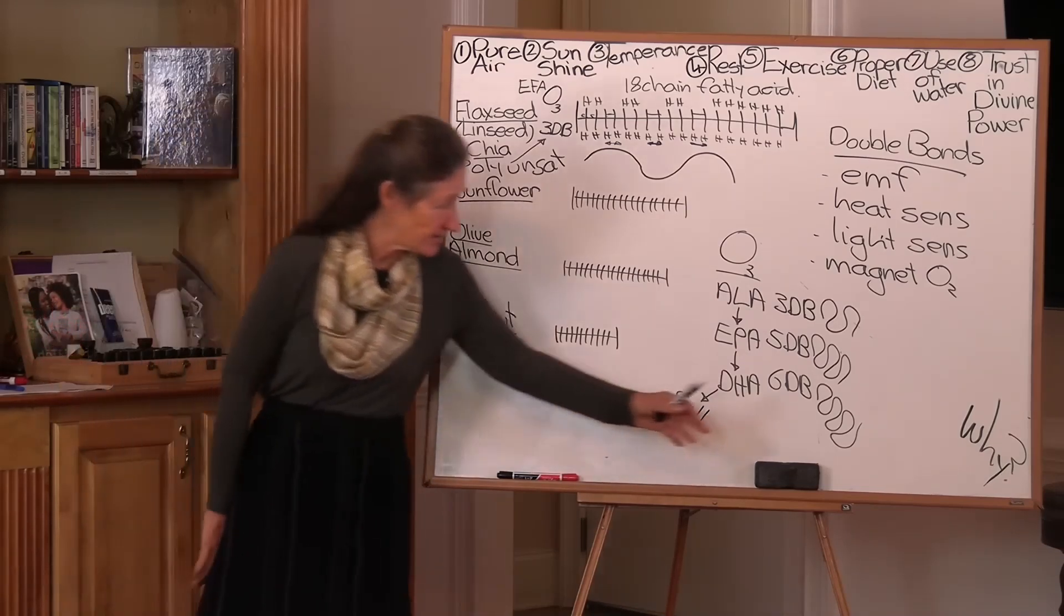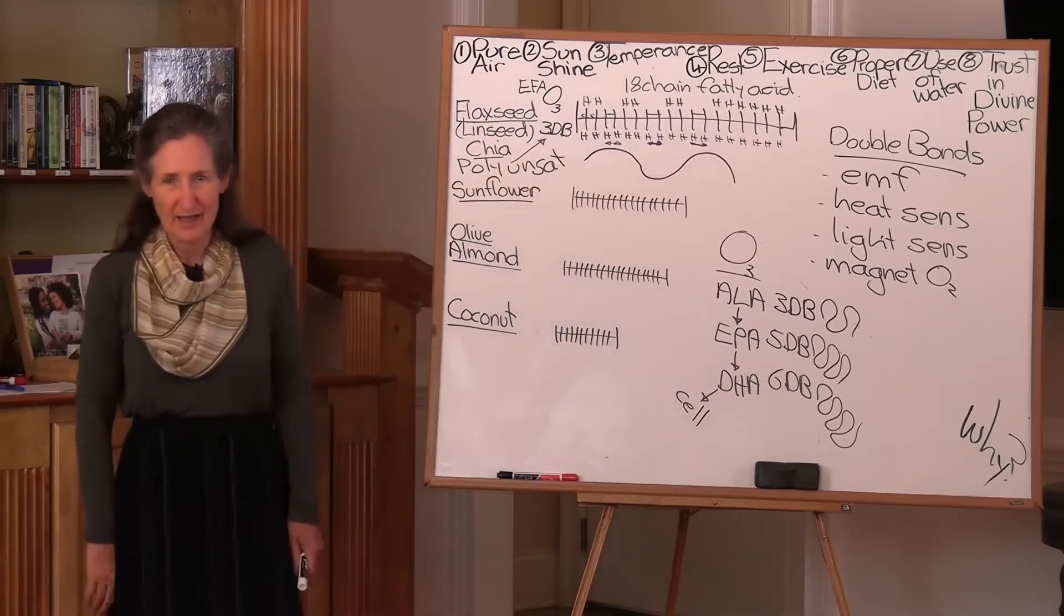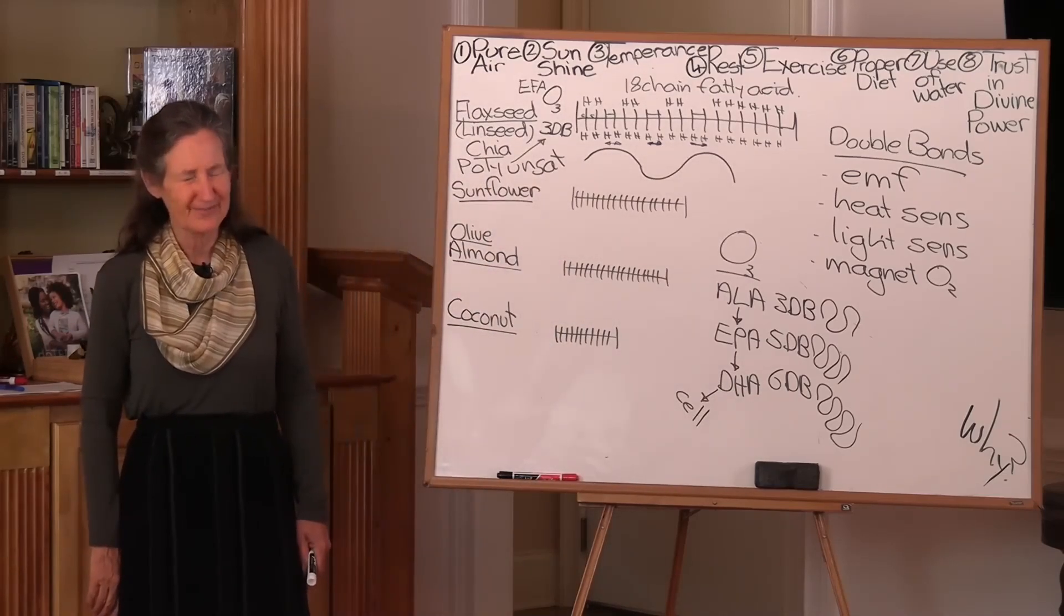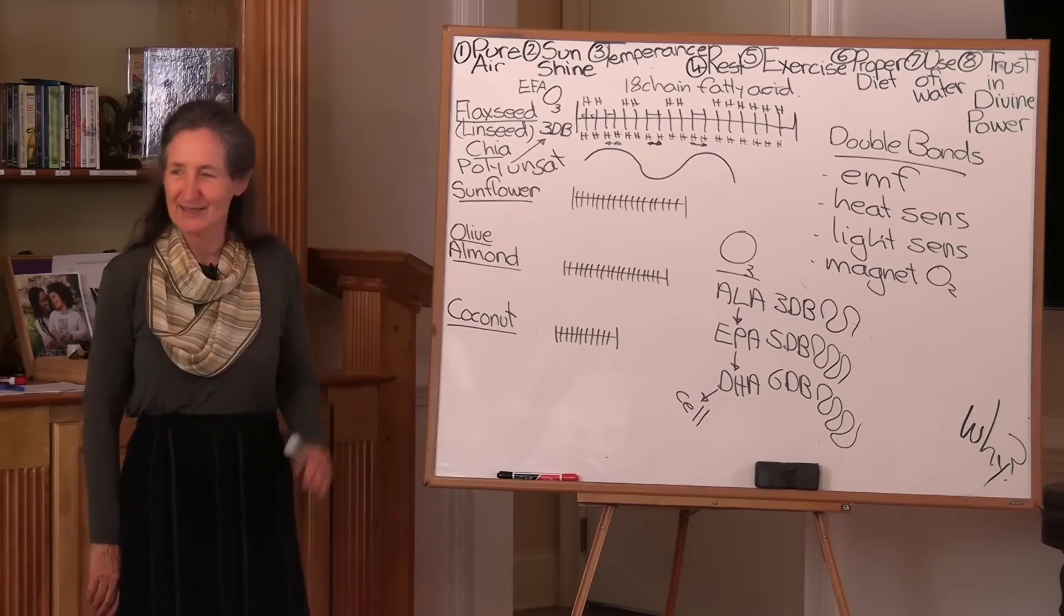And the fish that are the highest in DHA are the highest in mercury. And what's mercury? That's a neurotoxin.